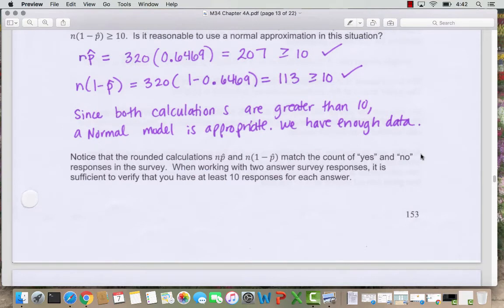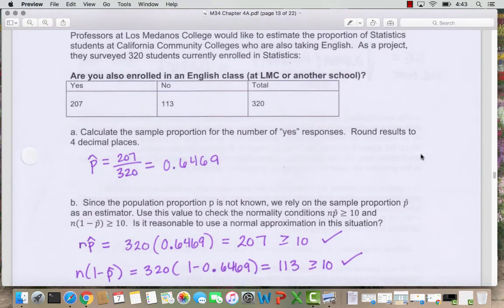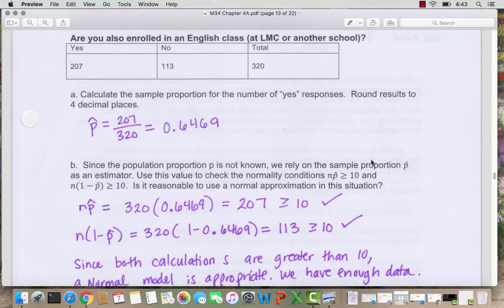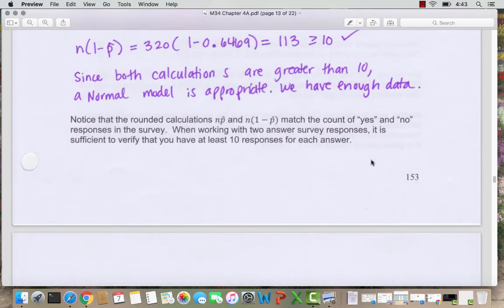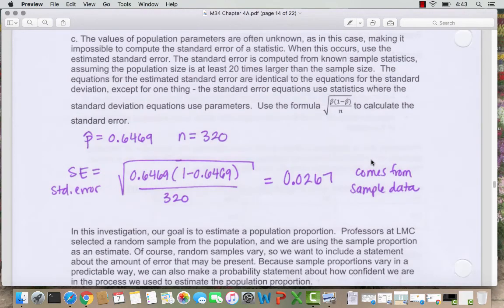And I put a note here. Notice that the rounded calculations match the counts of yes or no in the table of the responses in the survey. So if you're working with survey questions like this, it's sufficient to check to make sure, do I have at least 10 responses in each category?